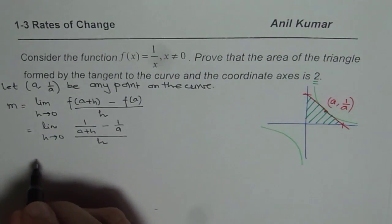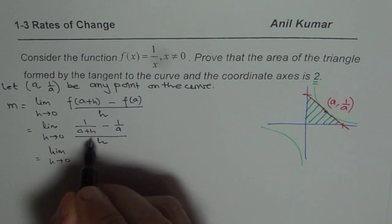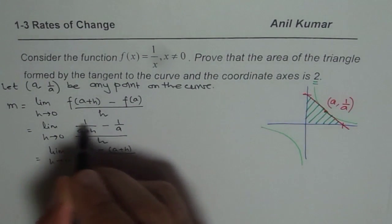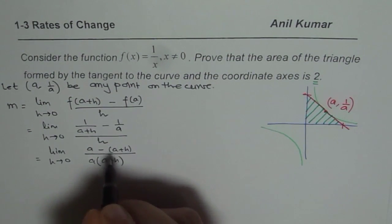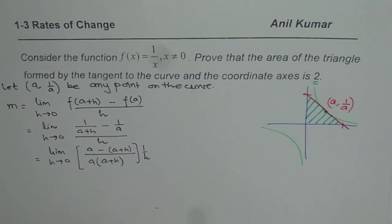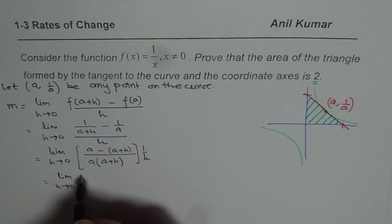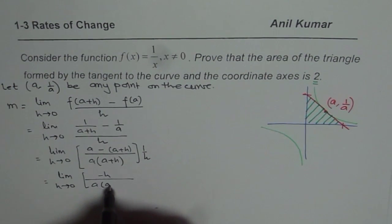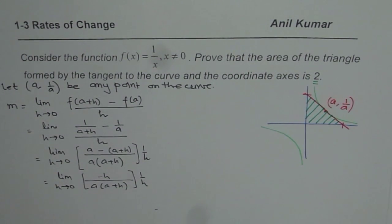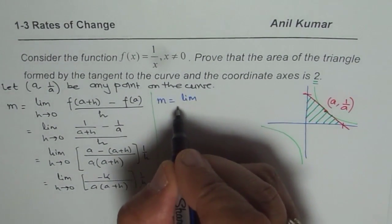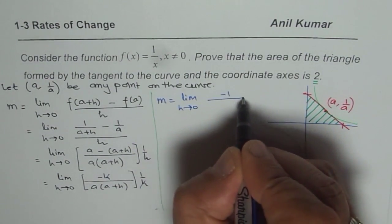We cross multiply and take the common denominator. So we get limit h→0 of [a − (a+h)] over [a(a+h)] times 1/h. Simplifying: a − a is 0, so the numerator becomes −h. We get −h divided by a(a+h) times 1/h. At this stage, h and h cancel, leaving −1 over a(a+h). So the slope m equals limit h→0 of −1 / [a(a+h)].